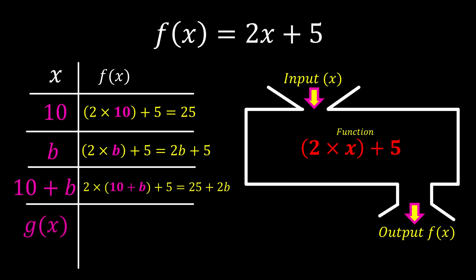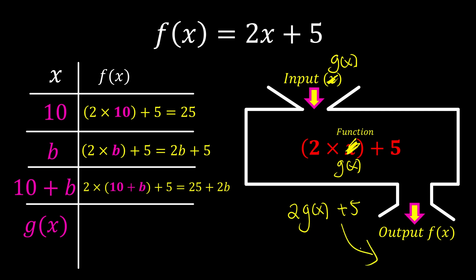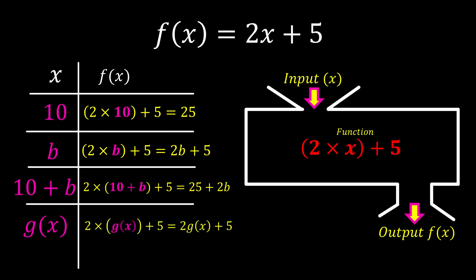What if you give me a function as the input — is that possible? Yes, it's possible. If you give me a function, all the x's now become that function. So what happens is 2 times g(x), which is 2g(x) plus 5, and this is what we give you back. So the result is 2g(x) + 5.